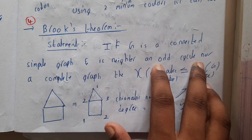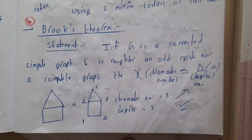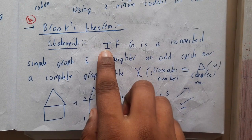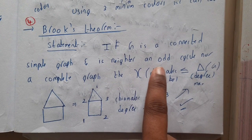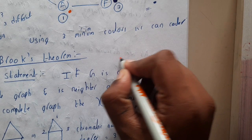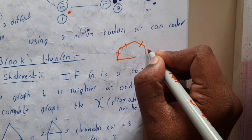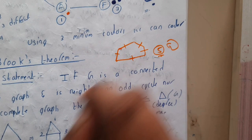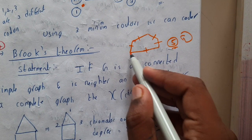This holds for all graphs which do not have an odd cycle and which are not complete graphs. If graph G is a connected simple graph and neither has an odd cycle — an odd cycle is a cycle with an odd number of vertices, like a cycle of length 5 — then this theorem applies. It is also an odd length cycle.